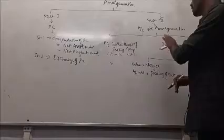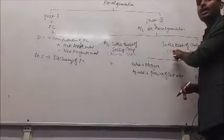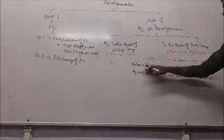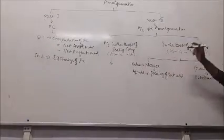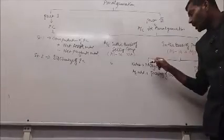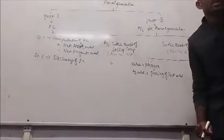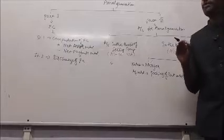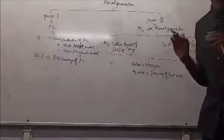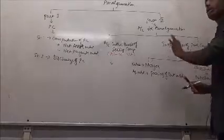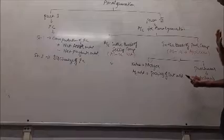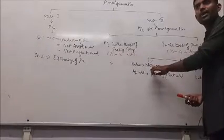In the books of the purchasing company, we have two methods: in the nature of purchase and in the nature of merger. To qualify as amalgamation in the nature of merger, there are five conditions as per AS 14. If all five conditions are cumulatively satisfied, it is merger. If any one condition is violated, it is the purchase method.